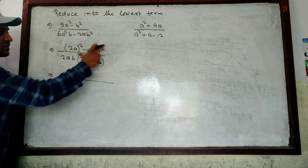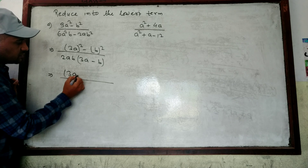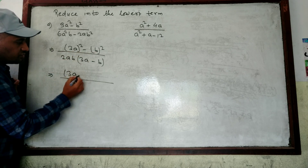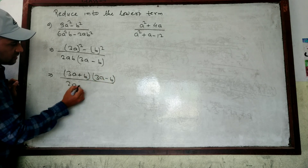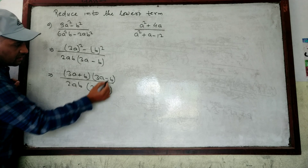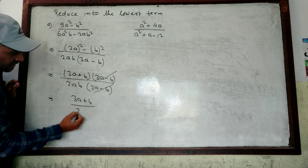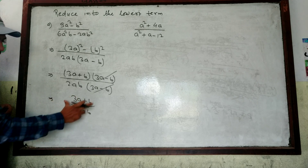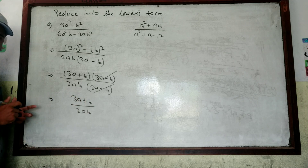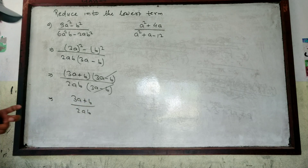Now look at this properly. For (3a)² minus b², we use the a² minus b² formula: (a+b)(a-b). In place of a we have 3a and in place of b we have b. So the numerator becomes (3a+b)(3a-b). The denominator is 2ab(3a-b). The (3a-b) terms cancel. What is remaining is (3a+b) divided by 2ab. Note: we cannot cancel a or b from inside the binomial (3a+b) — that would be wrong because of the plus sign.